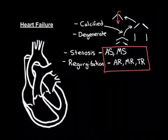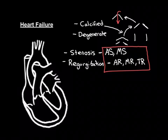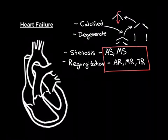Mitral stenosis: if the mitral valve is stenosed, the left atrium is not going to be able to move blood into the left ventricle effectively, reducing cardiac output because less blood is flowing through the system. Again, that's an example of left heart failure — the pathology is on the left-hand side — and it could lead to pulmonary oedema.